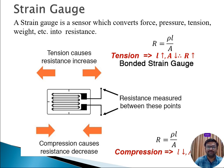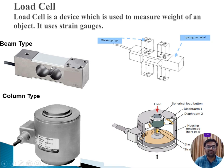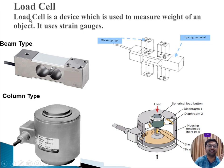Next, we will see what exactly happens with a load cell. A load cell is a device used to measure the weight of an object, and it uses a strain gauge as its sensing element. The strain gauge experiences the exerted force and converts it into a resistance change, and the load cell then converts that resistance into an electrical signal.